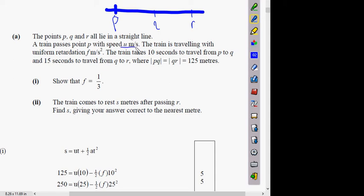We know it's starting off with speed U, it's currently decelerating. The train takes 10 seconds to travel from P to Q. If it is in fact a deceleration, I'm expecting Q to R to be smaller. 15 seconds to travel from Q to R. Where PQ equals QR equals 250. Show that F equals one third. So what is your UVAST system?